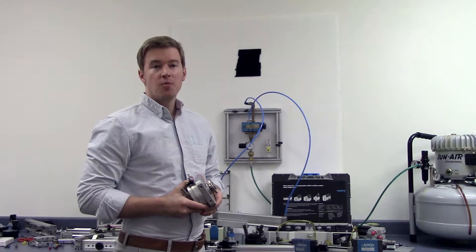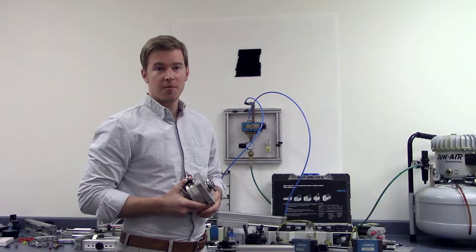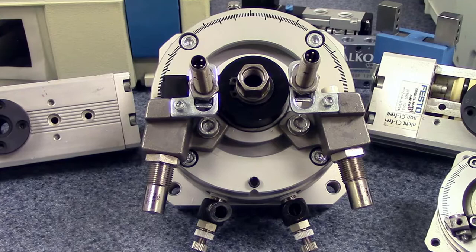Many pneumatic actuators are designed to move objects back and forth along a linear path, but in some applications the work pieces must be twisted or rotated. To do this, a rotary actuator should be used.